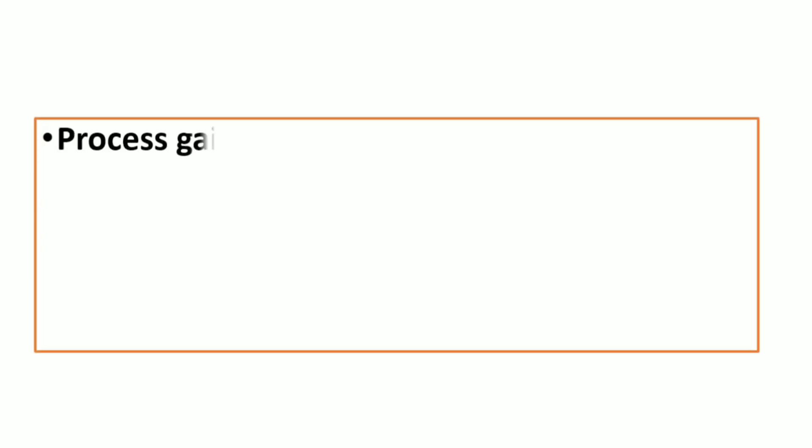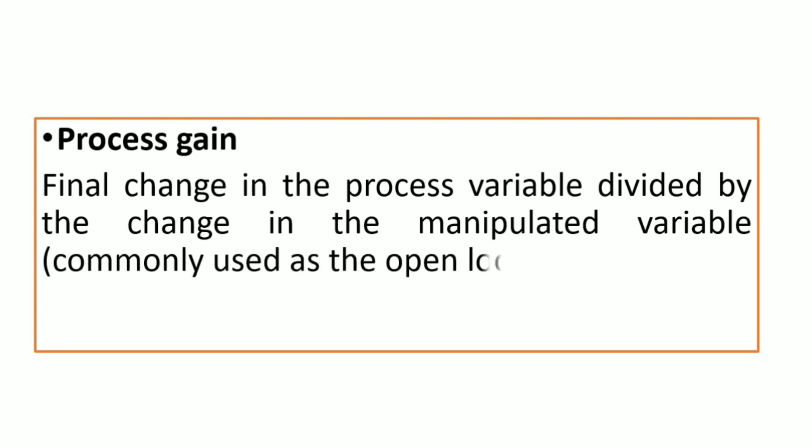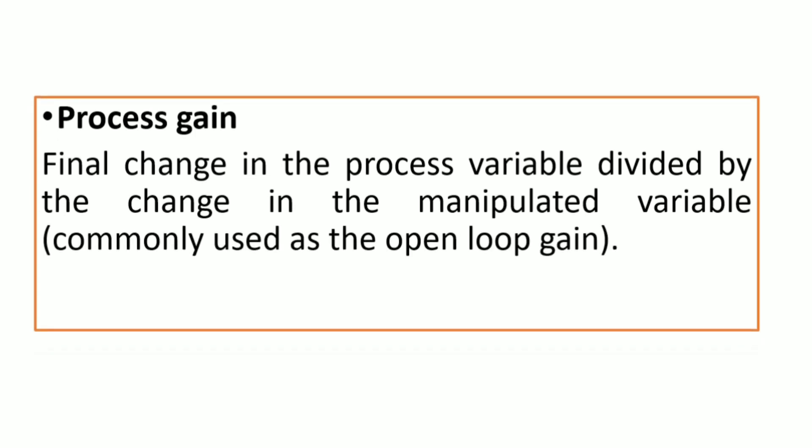What is process gain? The final change in process variable divided by the change in manipulated variable, commonly used as open loop gain.